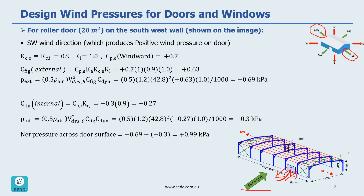Let's look at the first situation, which means southwest wind direction. In this situation KCE and KCI would be 0.9 — this is the case related to doors and windows. KL is 1 because this is for structural elements, not claddings. CPE, because in this direction it's going to be considered as a windward wall, is positive 0.7. So our CFIG external would be CPE times KA — KA is 1 for windward walls — times KCE and KL. CFIG would be positive 0.63.